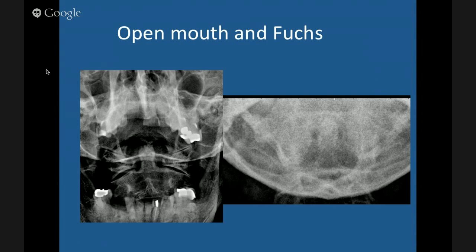The open mouth view shows the dens and the lateral masses of C1. Look at the margins here — make sure they're well aligned. The margin of C1 should always be sitting on the margin of C2. If you fracture the arch of C1 and the transverse ligament ruptures, you get widening of the arch of C1 on the open mouth. The Fuchs view, in my opinion, is not really useful. The patient hyperextends the neck and you shoot the beam up, trying to get the dens inside the foramen magnum. You need a really big fracture to see it on the Fuchs view.